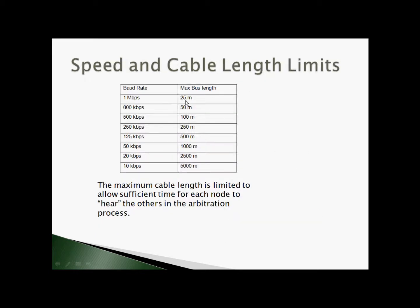Because each node needs to listen on the bus for a dominant state when it's transmitting a passive, it needs to be able to hear from the farthest end of the bus if another node is transmitting. This limits the bus length. In the case of one megabit per second, the bus is limited to about 25 meters, including time for the transceivers and optional isolation time.